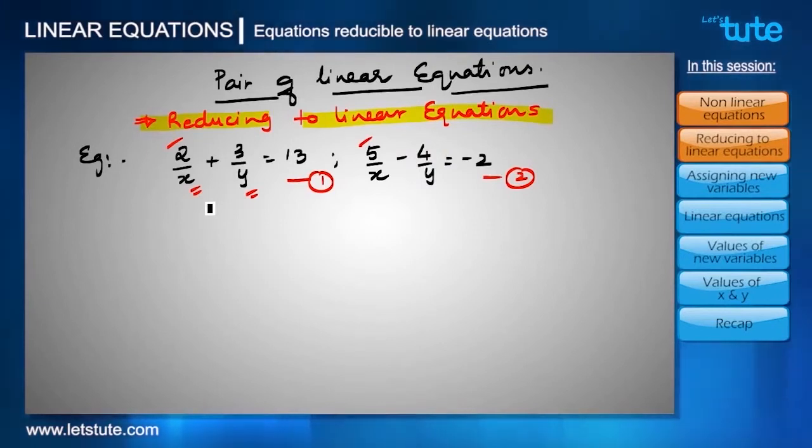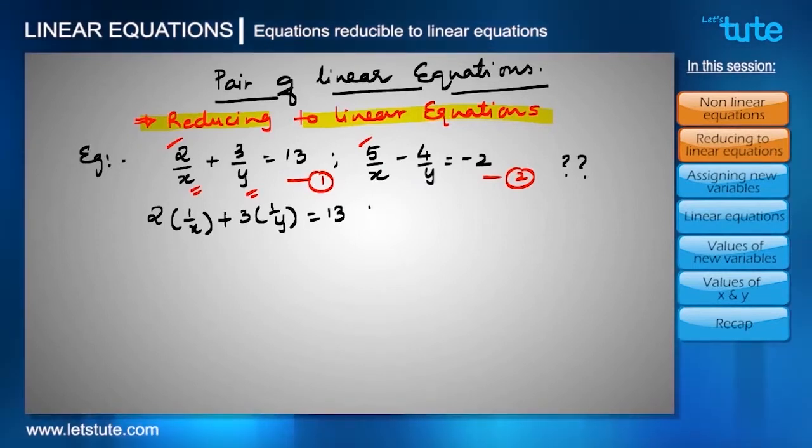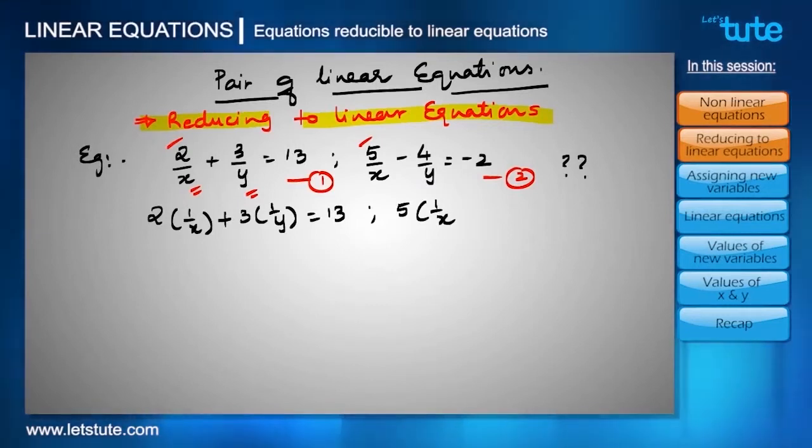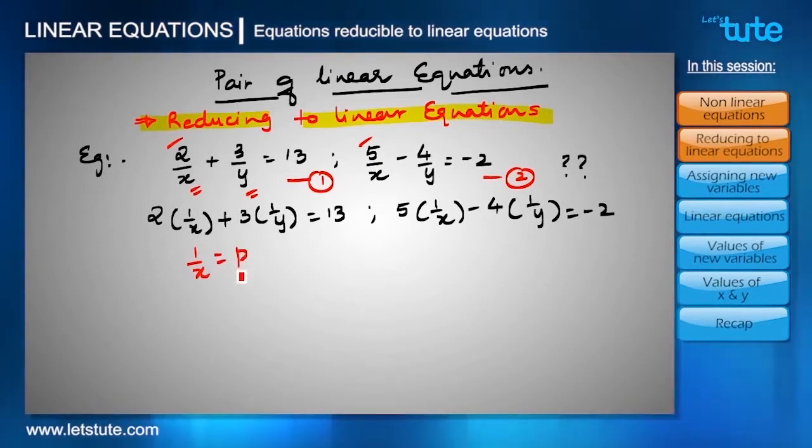Let's convert these equations into linear equations. We can write these equations as 2 into 1 by x plus 3 into 1 by y equals to 13, and this one we can write it as 5 into 1 by x minus 4 into 1 by y equals to minus 2. Let's put 1 by x equals to P, and in place of 1 by y, let's write Q.